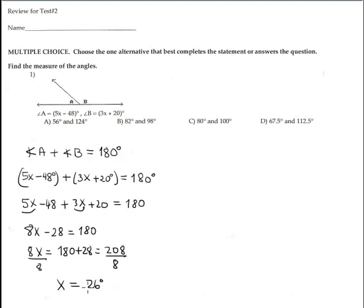Okay, now this is the value for X. But I need to find the value of the angle. I plug in 26 into each expression. For example, the first expression is 5X, but X is 26 minus 48. Now multiplication. 26 and 5 is 130 minus 48 equals 82.